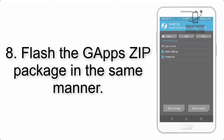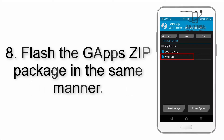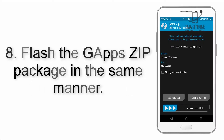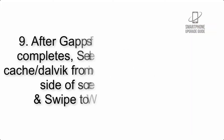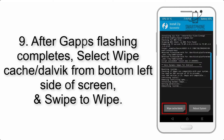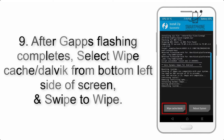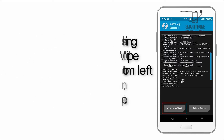Step 8: Flash the GApps ZIP package in the same manner. Step 9: After GApps flashing completes, select Wipe Cache from the bottom left side of the screen and swipe to confirm.